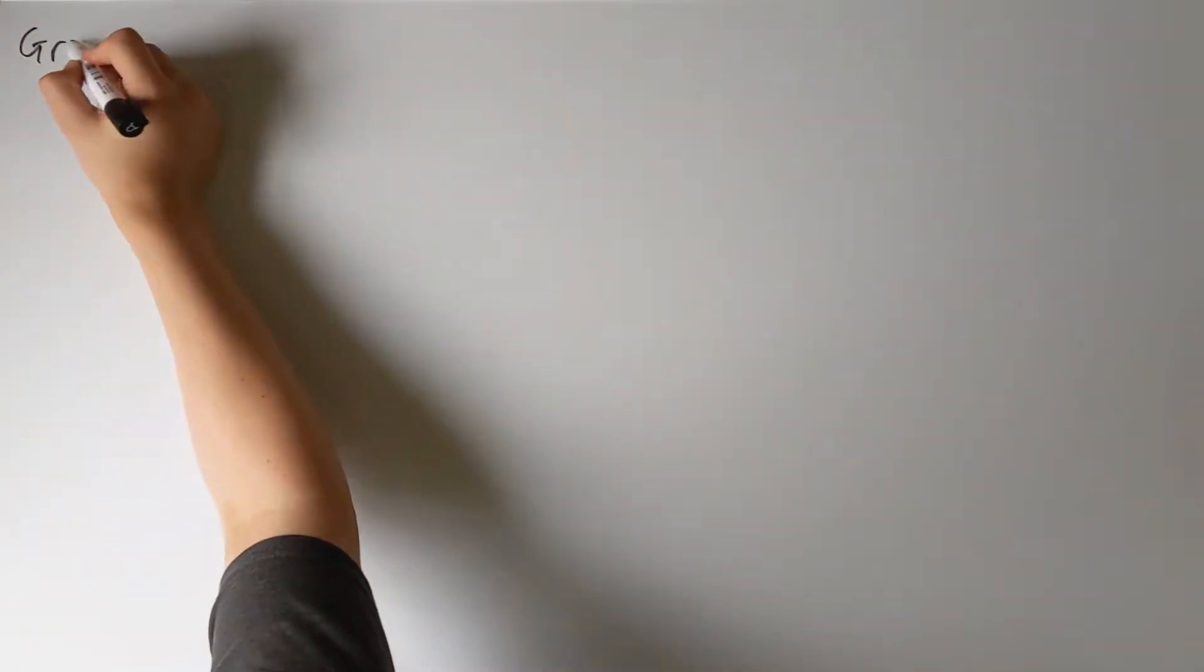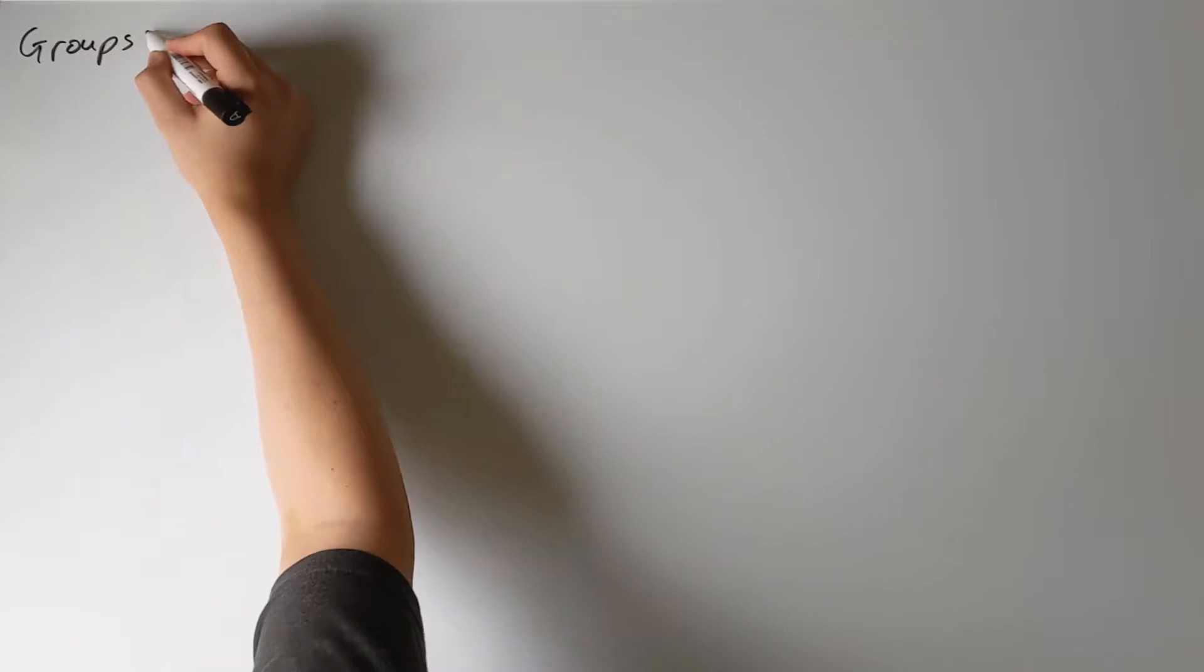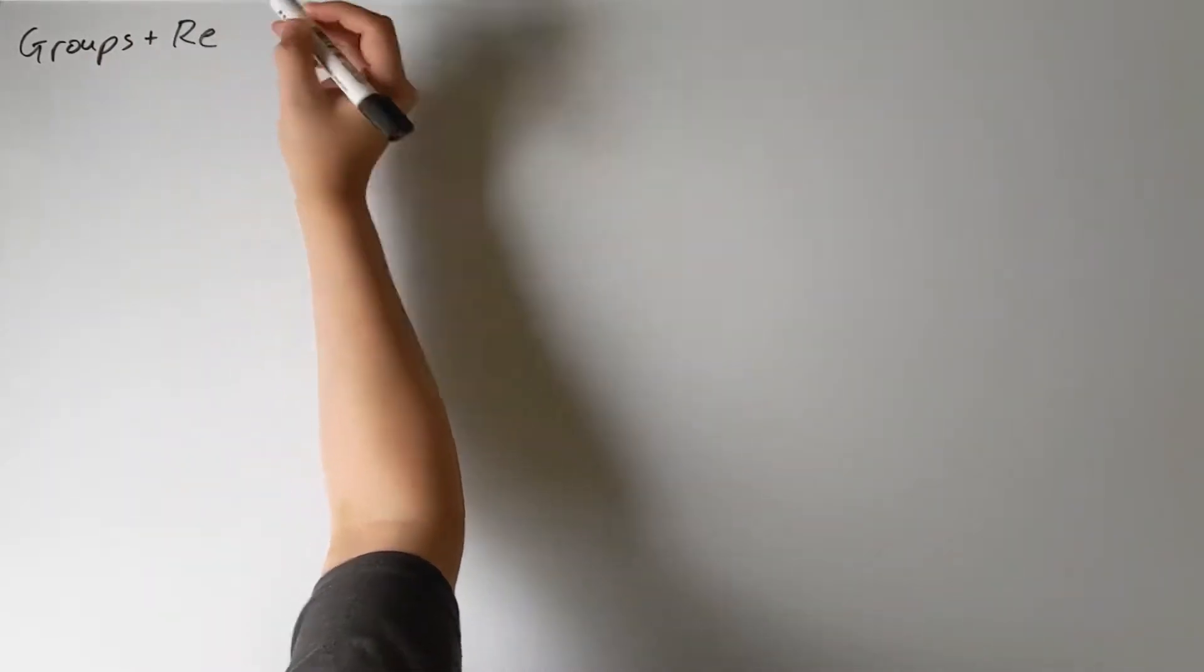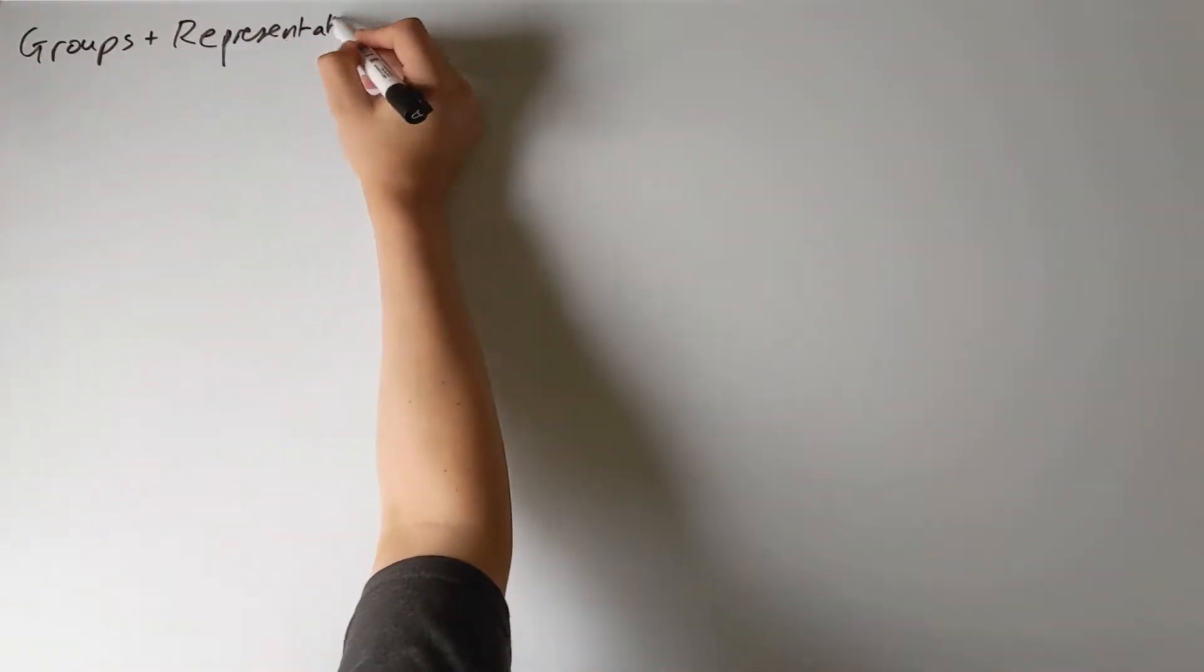Okay, so now we know at least abstractly what it means to be a group. It's helpful to consider a few examples, so I'm going to construct a group now from scratch and we can see how the group structure emerges.